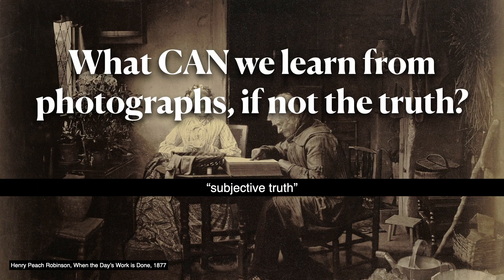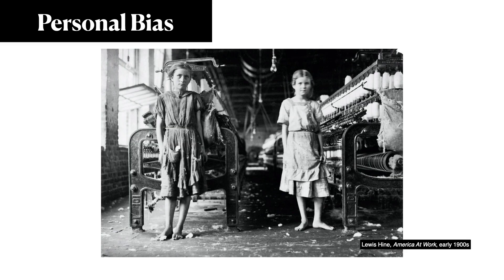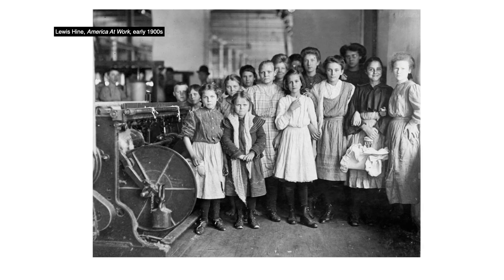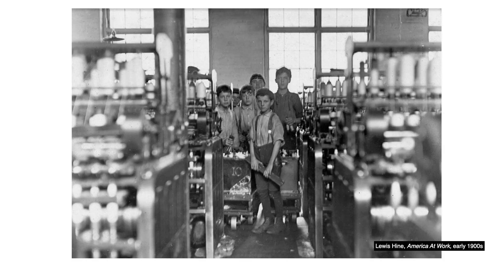Let's look at another example of personal bias. Photography has a long and successful history of creating social change through photojournalistic images that document a truth of something that needs to be fixed. While this usually creates a positive impact, it is still an example of revealing personal bias and telling a subjective truth. A famous historical example is Lewis Hine's factory series, which created a photographic argument to end child labor and successfully used the photographs to reform labor laws in America.